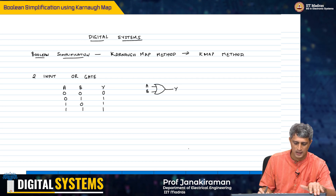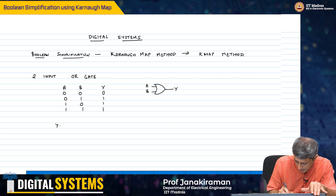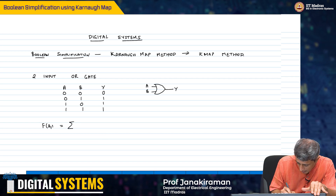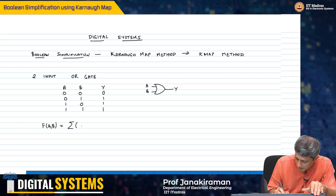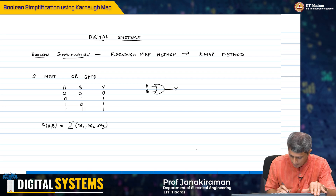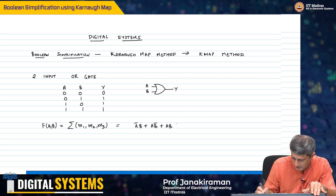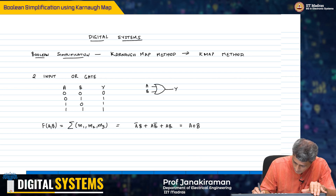So now, what we did earlier was to simply take the sum of product terms. We said that f(a,b) was going to be represented as min term 1, min term 2, and min term 3. This was going to be further simplified as ā·b + a·b̄ + a·b. And then we were able to simplify this expression and effectively show that this was equal to a + b.